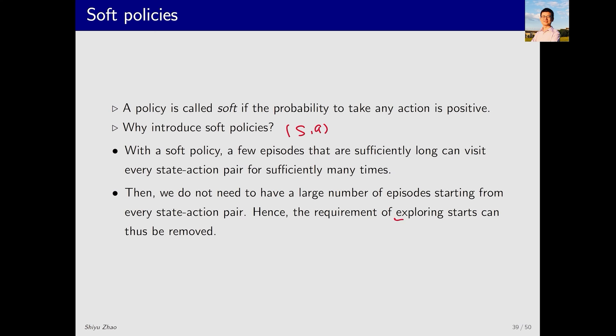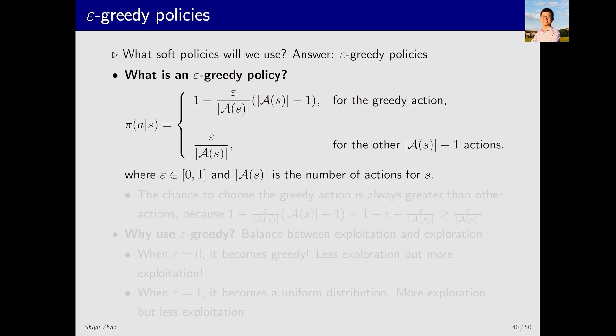Hence the requirement of exploring starts can thus be removed. That is, instead of starting from every SA, we can start from one or a few and then visit the others. What soft policies will we use?